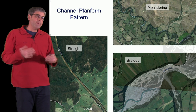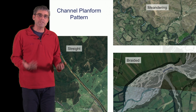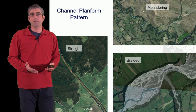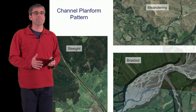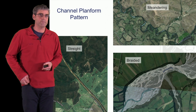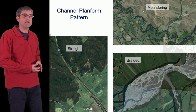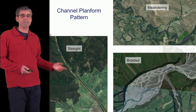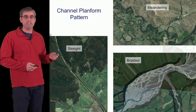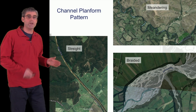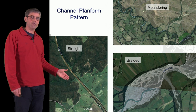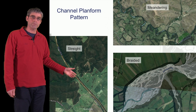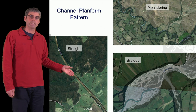The next thing to think about when characterising a river reach is the channel planform pattern. There are three key types. The first is a straight river planform. Here we can see the lower Snorri River in eastern Victoria — a particularly straight section of river as it emerges from the upland section down onto the lowland riverine plains. It's about five kilometres long, approximately 100 metres wide, and exceedingly straight.